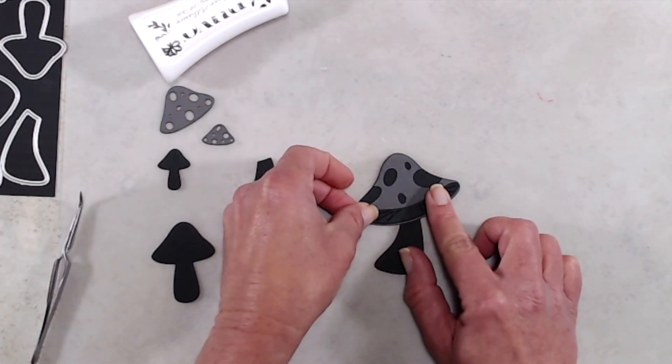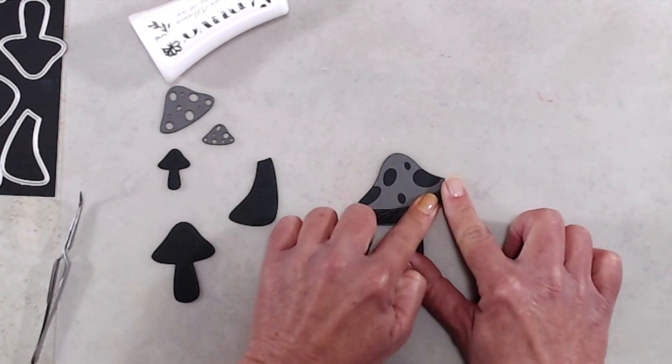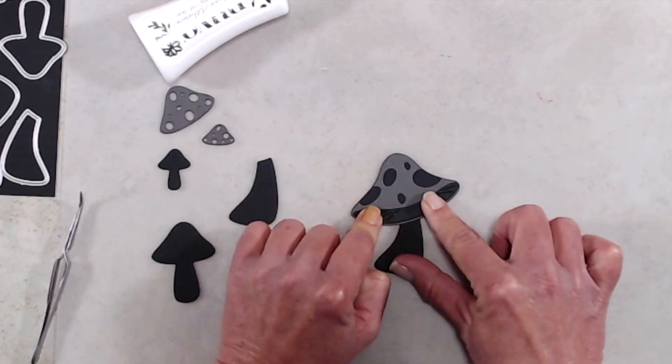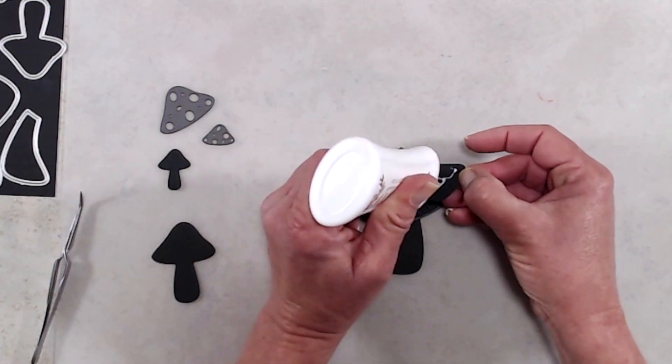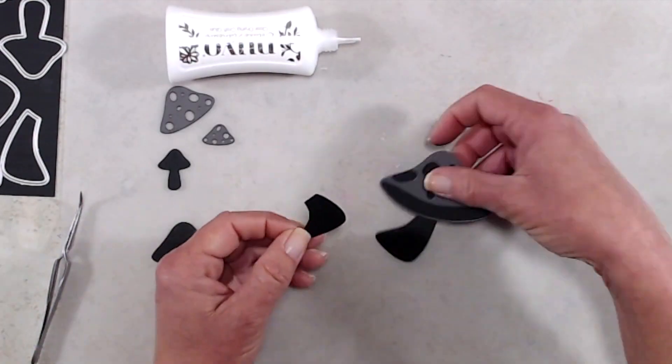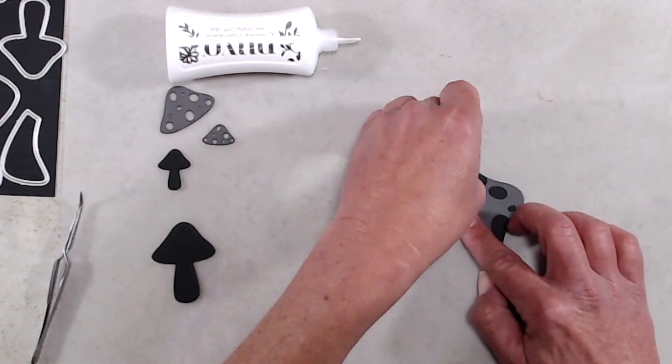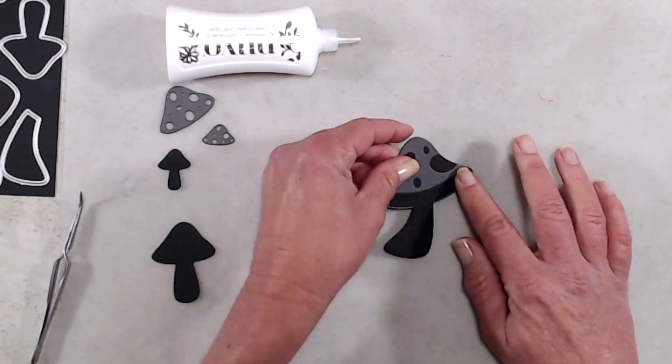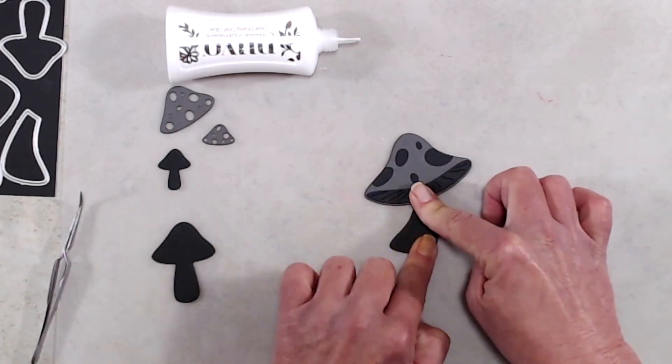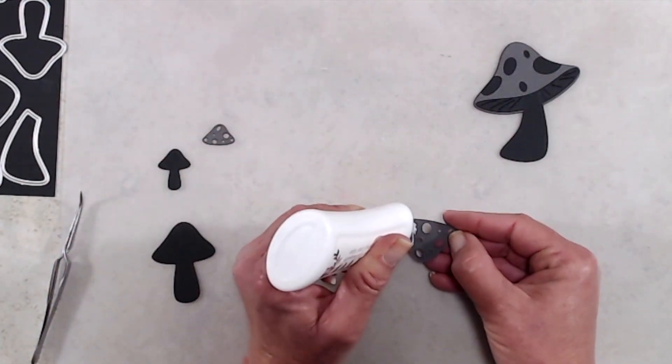And then to cover up that seam I just adhered the second stem right on top of that. So that is what the finished mushroom looks like. And then for the medium and the small mushroom I just adhered the caps right on top of the actual body of the mushroom. I would recommend that you use liquid glue to adhere those just so that you have a little bit of time to wiggle around just in case you didn't get them lined up quite right.